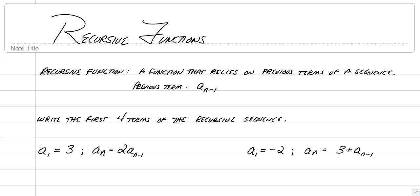A recursive function is a function that relies on previous terms of a sequence. The previous term is denoted by a sub n minus 1, which means the term you're on minus 1 — that means the previous term.